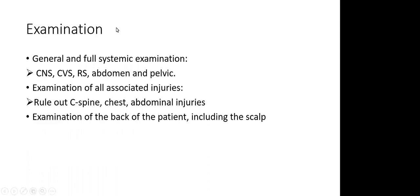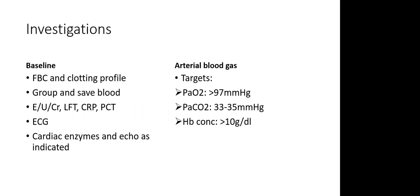On examination, do a full systemic assessment including CNS, cardiovascular system, respiratory system, abdomen and pelvis. Don't forget to examine for all associated injuries. A c-spine injury must have been ruled out at the emergency department or during surgical intervention, but it is still very proper for you as the ICU physician to ensure that c-spine injury is ruled out and the c-spine is adequately protected. Look for chest and abdominal injuries, and don't forget to examine the back of the patient including the scalp.